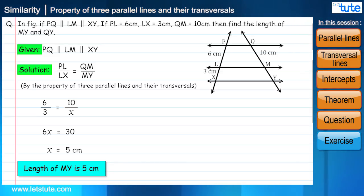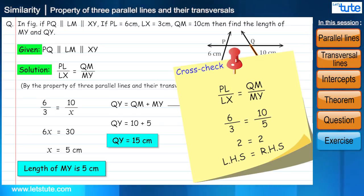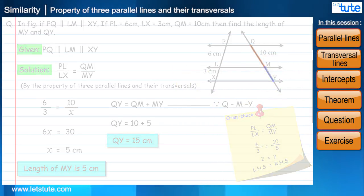Are we done here? No. Also, we have been asked to find the length of QY. As from the figure, QY equal to QM plus MY, therefore QY is 15 cm. Now let's cross check the solution. Now try to solve the next question on your own and write your answer in the comment box.